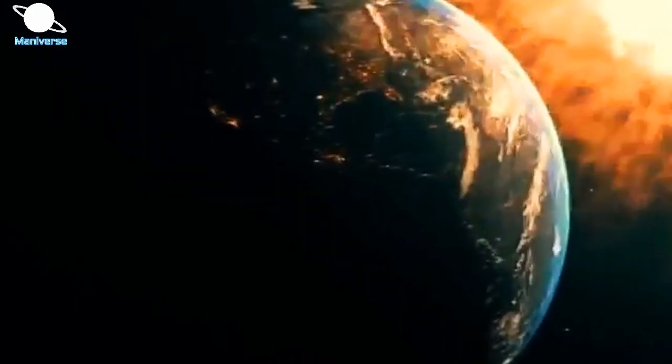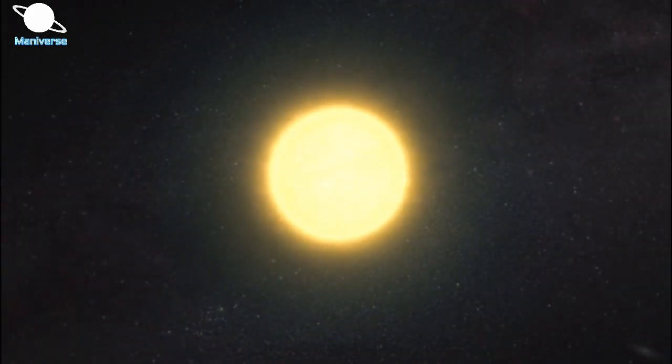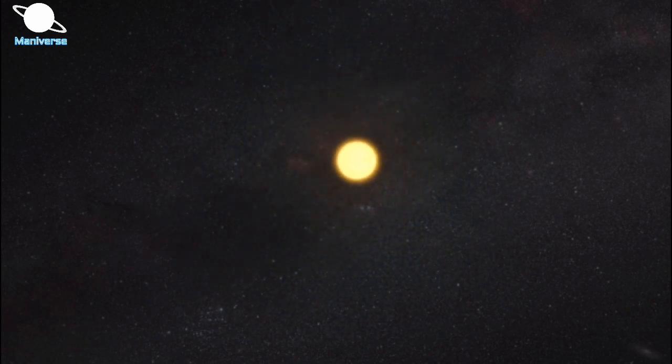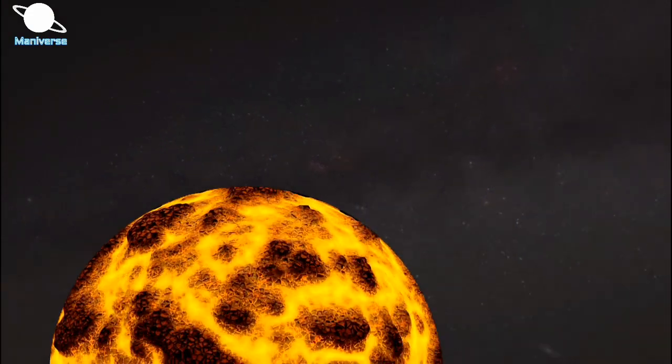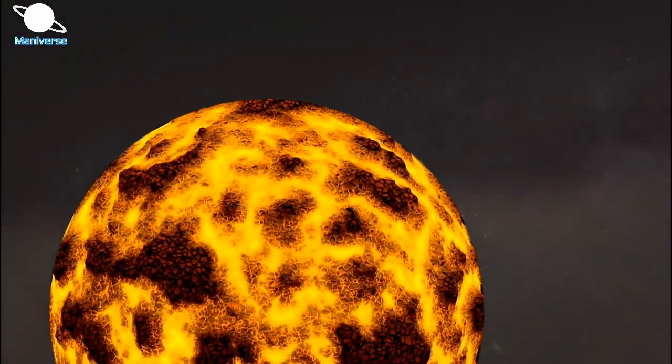Should we worry about Betelgeuse supernova? Will it be dangerous for Earth? Well, the answer is no. Betelgeuse is about 750 times the radius of our sun and 530 light-years away, which is well beyond the 50 light-years danger zone for Earth.